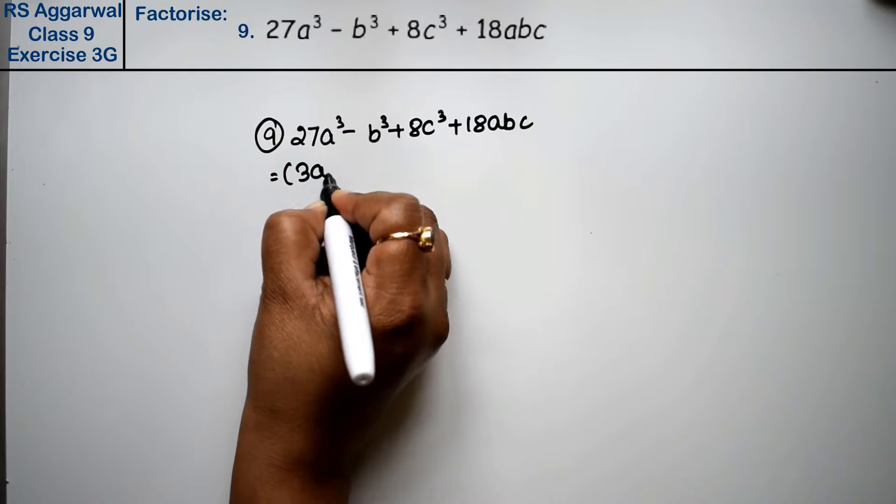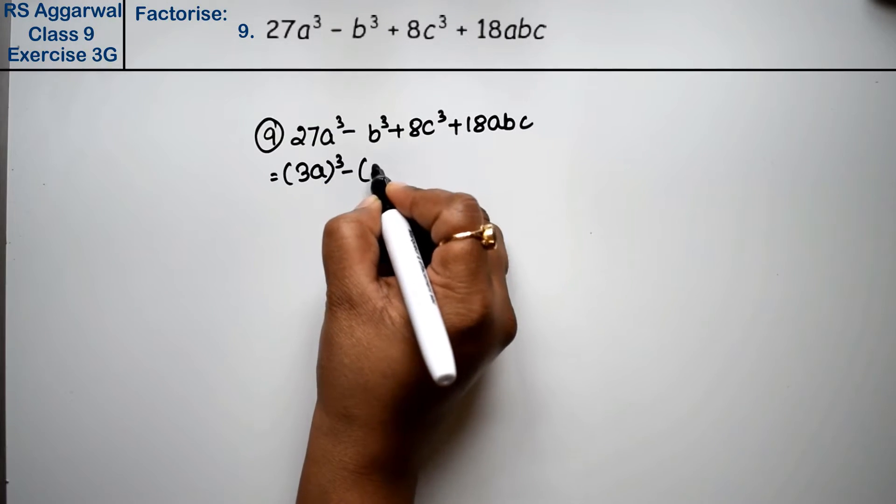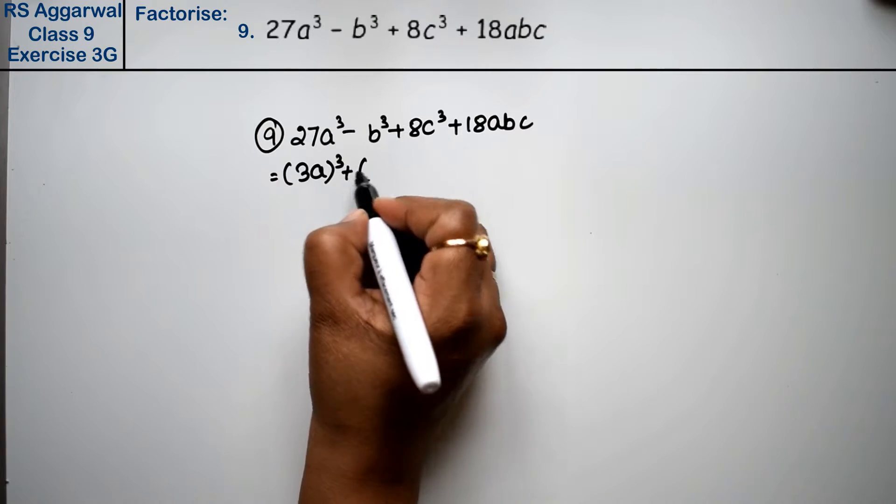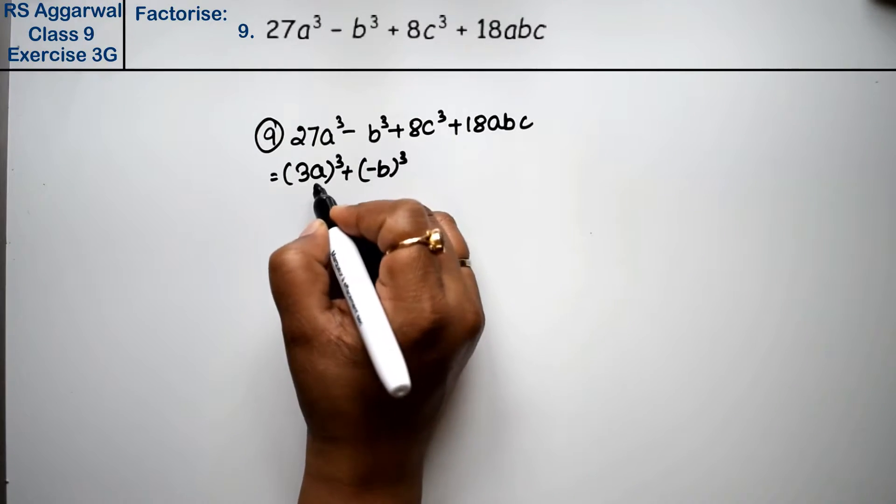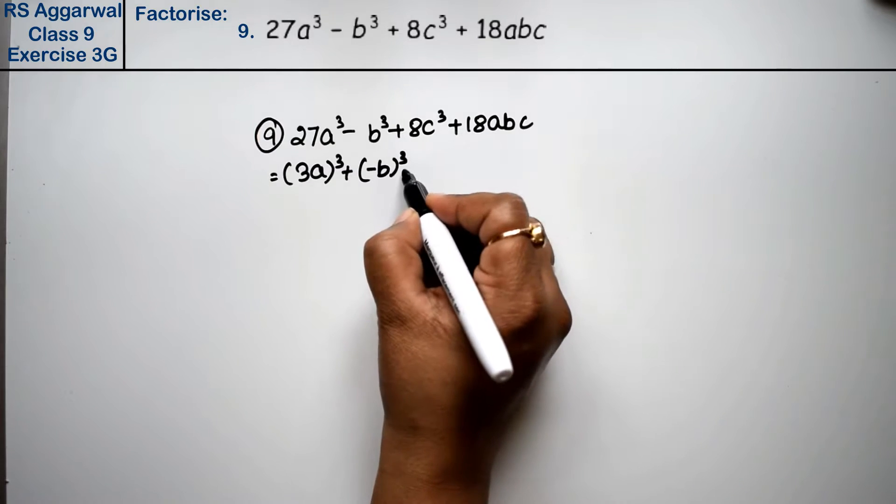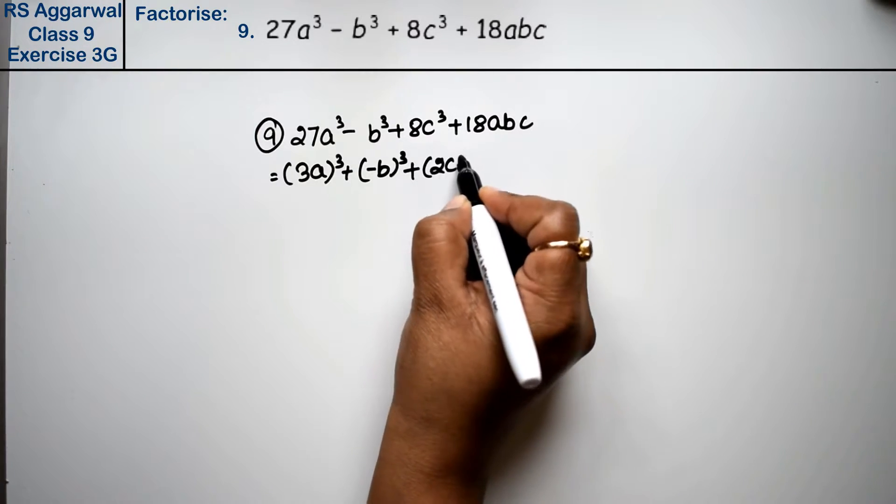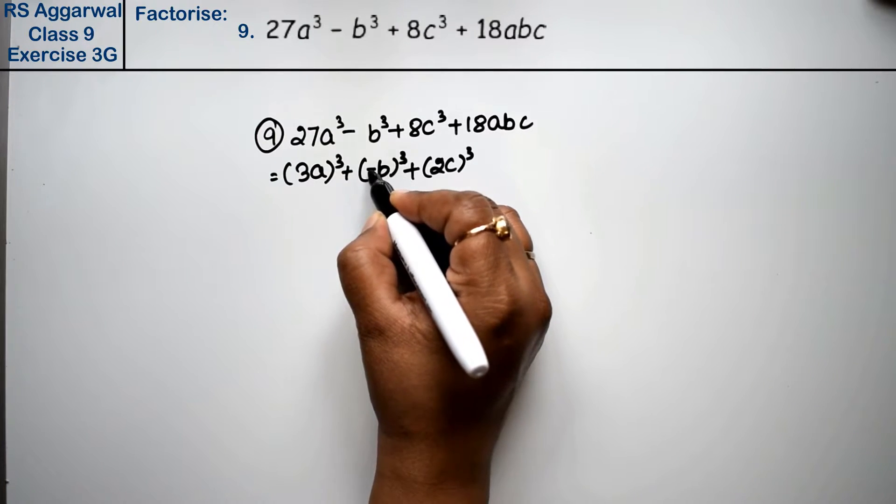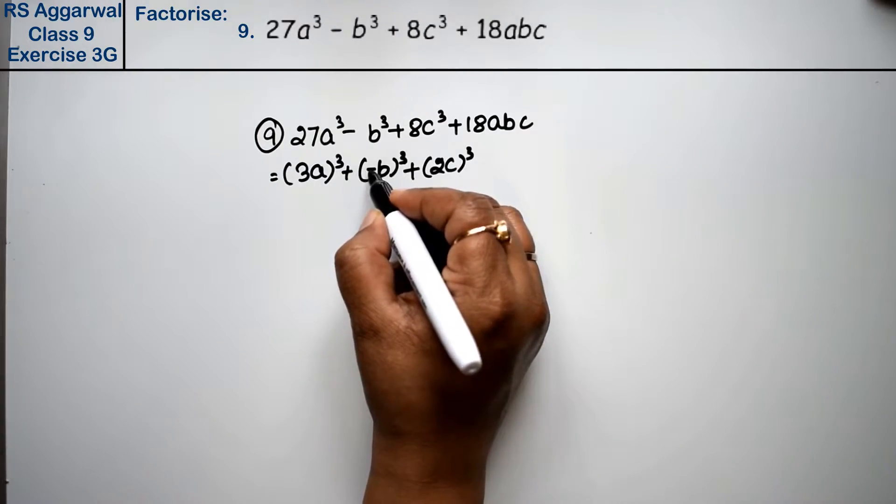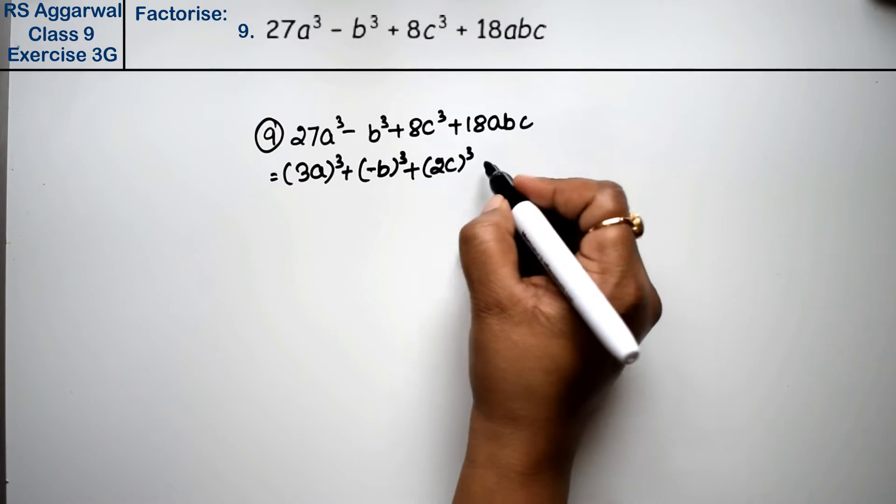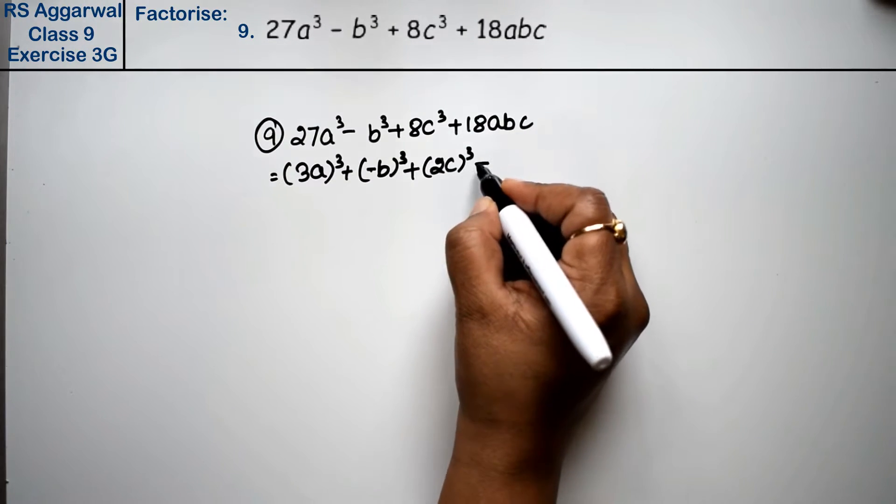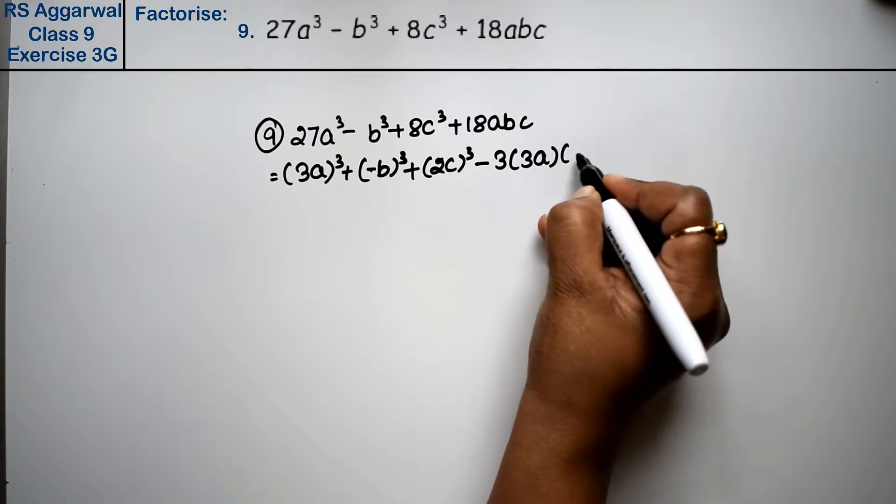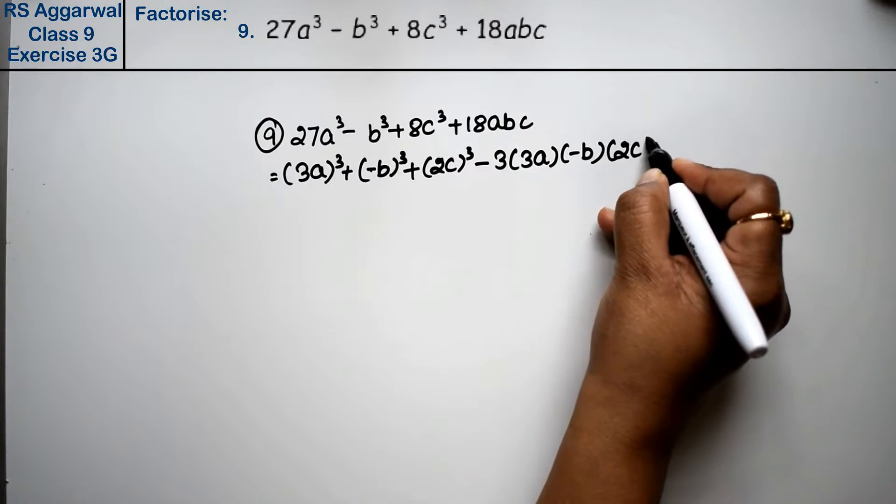This is 3a whole cube. We can write this minus b³ as minus b whole cube, and this 8c³ as plus 2c whole cube. If the sign is negative, then the pattern minus plus minus will be here. Plus minus 3 into 3a, minus b, and 2c.